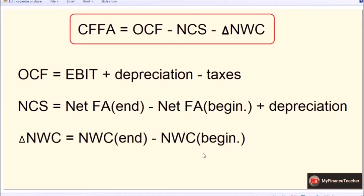A similar formula applies for changes in net working capital — denoted with a triangle for 'change' — but short-term assets do not have depreciation applied to them. So we simply subtract net working capital at the beginning of the year from net working capital at the end of the year to get the change for that year.